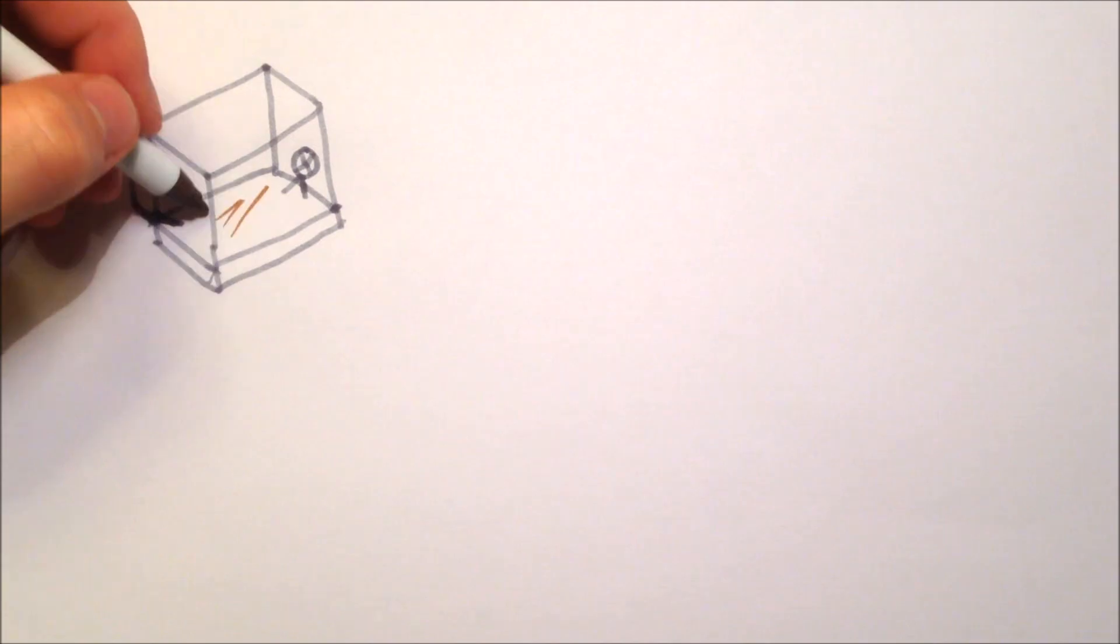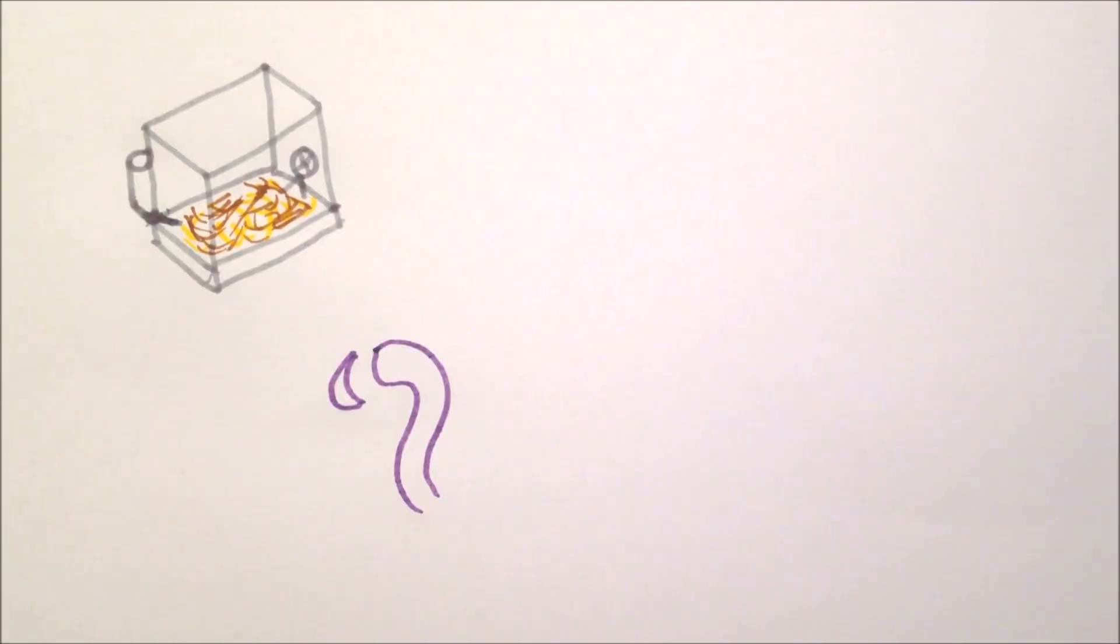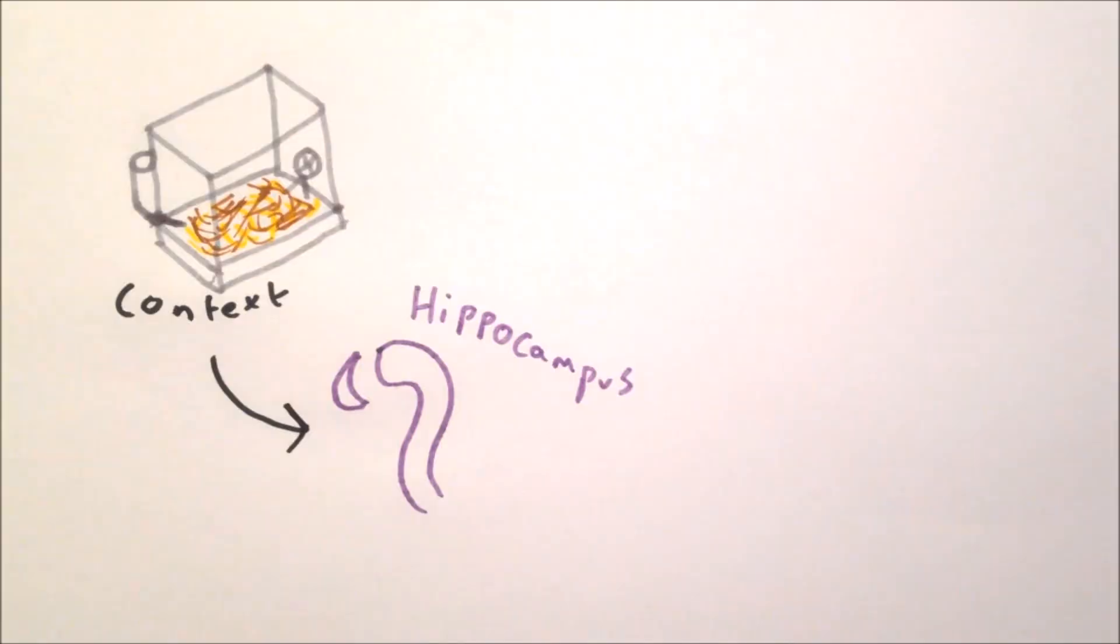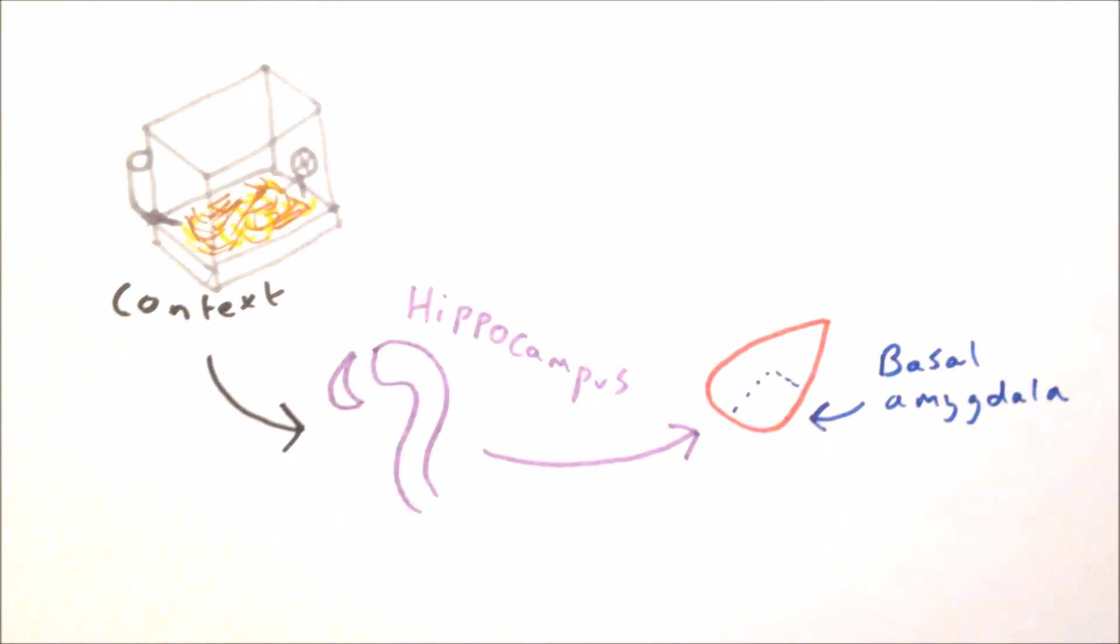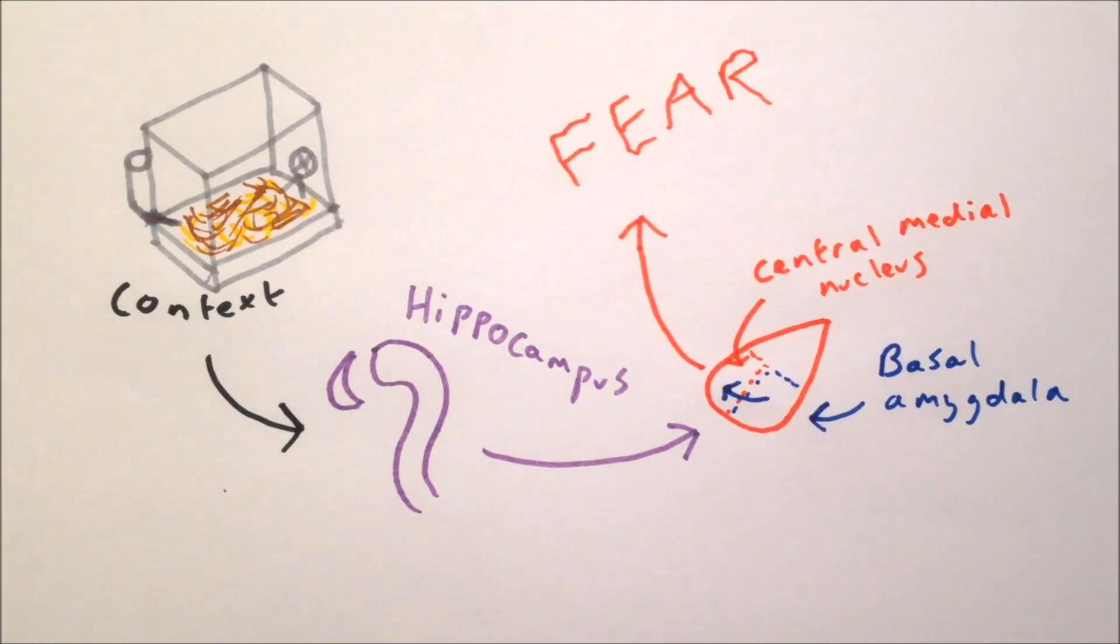One of the primary areas responsible for this is the hippocampus, which, as we have seen in previous videos, plays an important role in storing episodic memories. Neurons from CA1 and the subiculum areas of the hippocampus project to the basal nucleus of the amygdala, and through this are able to stimulate the central medial nucleus and allow contextual cues to produce fear.